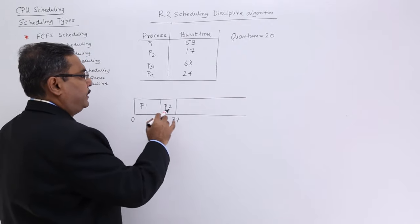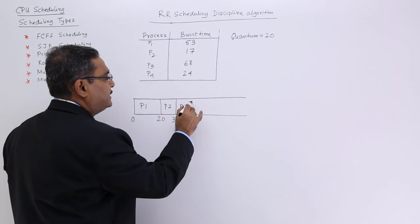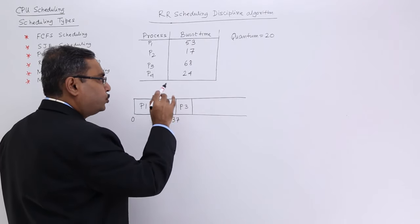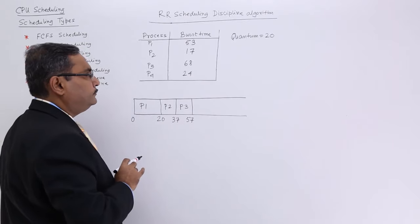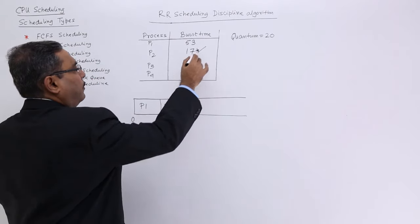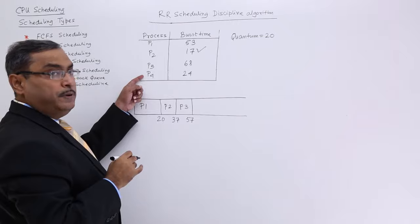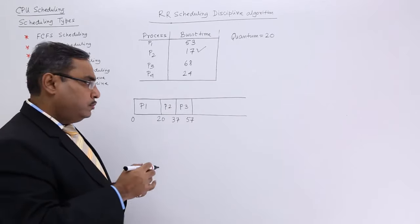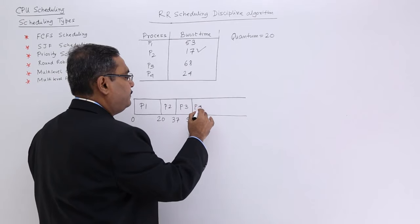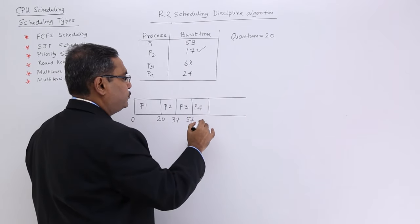Next will be P3. Now P3 is having a burst time of 68. So 20 can be given to it. So I am making this one 57. Then P2 got completed. Now we are going for P4. P4 is having a burst time of 24. So one quantum can easily be allocated. So it will be 20.